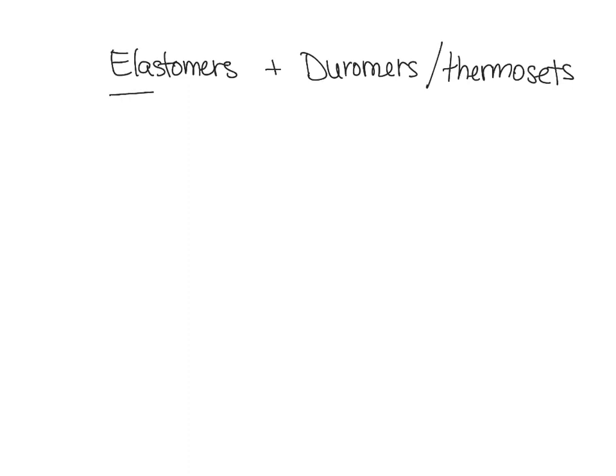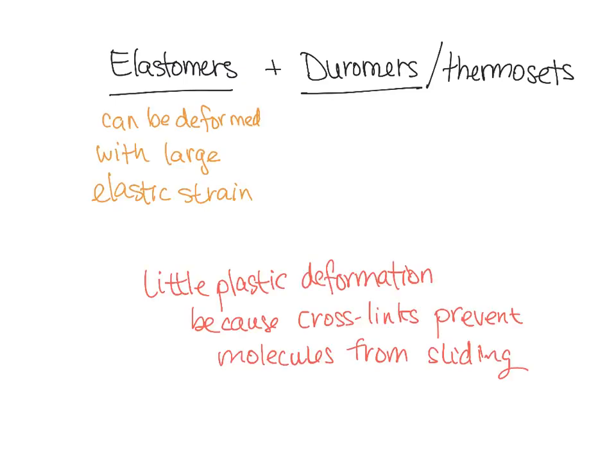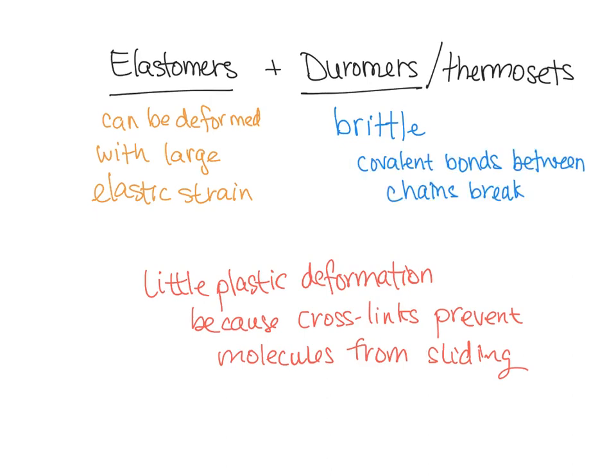To conclude: the plastic deformation of elastomers and duromers both shows very small amounts of plastic deformation because cross-links prevent molecular sliding. Elastomers used above the glass transition temperature can be deformed elastically, but not really plastically. Duromers are essentially brittle because of their many cross-links, causing covalent bonds between chain molecules to break. We have now covered the plastic deformation behavior of amorphous and semi-crystalline thermoplastics, and wrapped up with how other polymer structures deform.